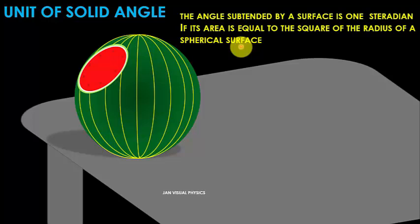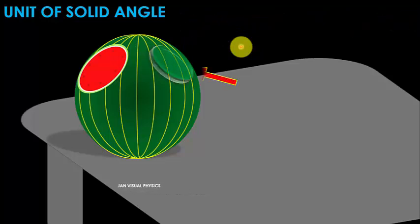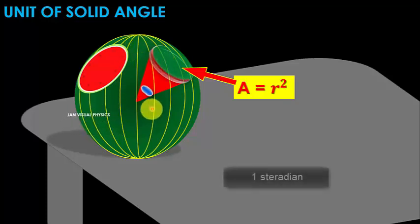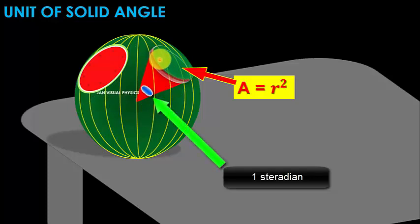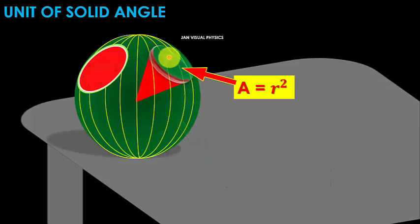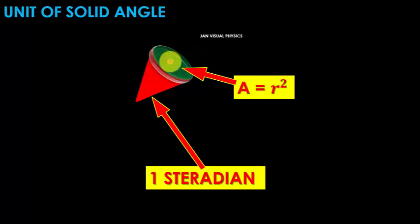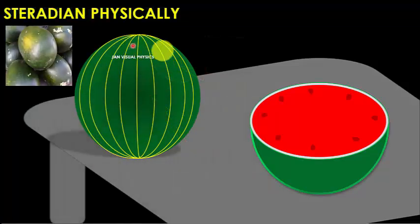According to this definition, we take a circular surface on this spherical object. The angle subtended by this circular surface at the center of the spherical object will be one steradian if the area of this surface is equal to the square of the radius of the spherical object. Then the angle subtended by this circular surface will be one steradian.